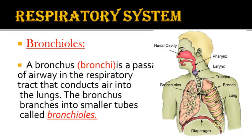A bronchus is a passage of airway in the respiratory tract. You can see the small branches present in the lungs — these are the bronchioles. The trachea divides into bronchi, and these further divide into smaller tubes called bronchioles, which conduct air into the lungs. The bronchi are the main branches, and the smaller further branches are called bronchioles — they carry air deep into the lungs.